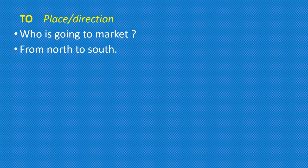First, we will learn 'to'. This shows place and direction. Who is going to market? From north to south. He will be sent to jail. Here 'to' indicates place.